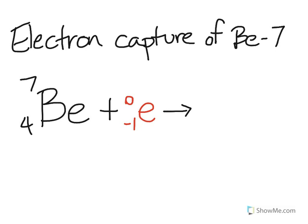Technically it doesn't really gain too much in mass because a proton from the beryllium actually combines with the electron to form a neutron. And the answer to this problem is actually lithium 7.